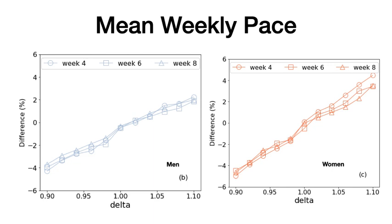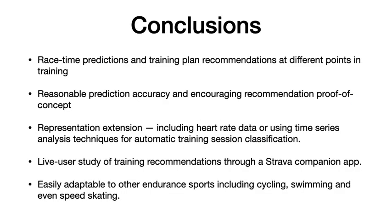This provides encouraging proof-of-concept evaluation, and in future we would like to conduct a live user study to show whether recommended plans are feasible and useful for runners. In conclusion, we've provided race time predictions and training plan recommendations at different points in training. Prediction accuracy was reasonable and the proof-of-concept evaluation was encouraging. Future improvements could include heart rate data or time series analysis for automatic training session classification. We are building a Strava companion app for the live user study, and this work is adaptable to other endurance sports including cycling, swimming, and speed skating.